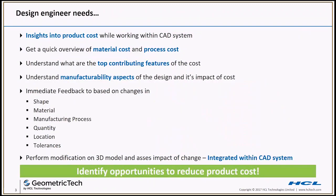Design engineers need the following insights into product cost while working within their CAD system. They need to get a quick overview of material cost and process costs as they are designing. They need to understand what are the top contributing features that are imposing the extraneous cost, and the manufacturability aspects of the design and its impact on cost. Designers also need immediate feedback based on changes in shape, material, manufacturing processes, quantity, location, and tolerance.